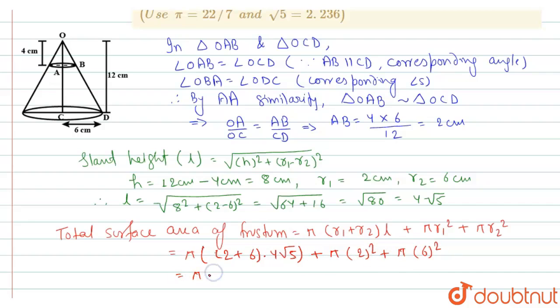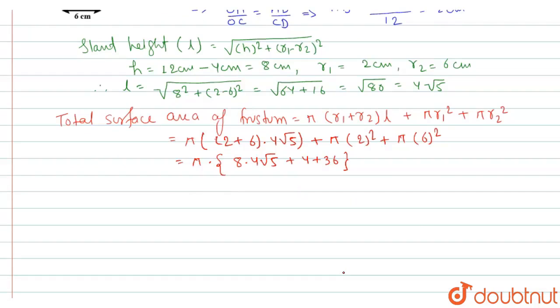So this is equal to pi into 8 into 4 root 5 plus 4 plus 36, which gives 22 by 7 into 32 into, for root 5 we can take 2.236, plus 36 plus 4 will be 40. So this comes to 350.59 centimeter square.